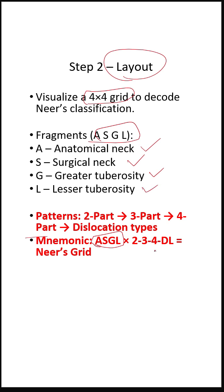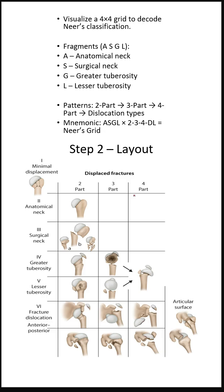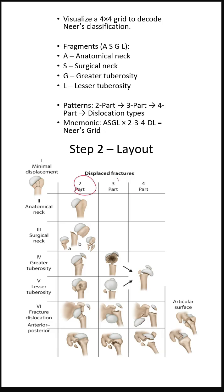Now move across the grid: 2-part, 3-part, 4-part, and the addendum in the bottom—fracture dislocation types, anterior and posterior.